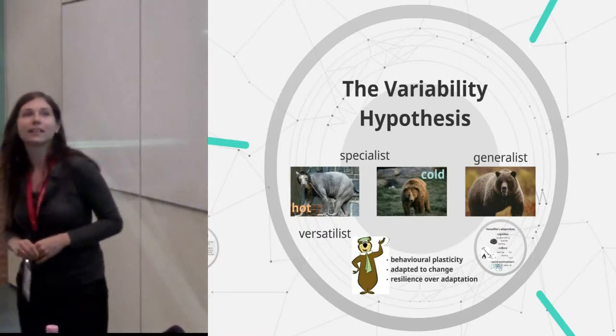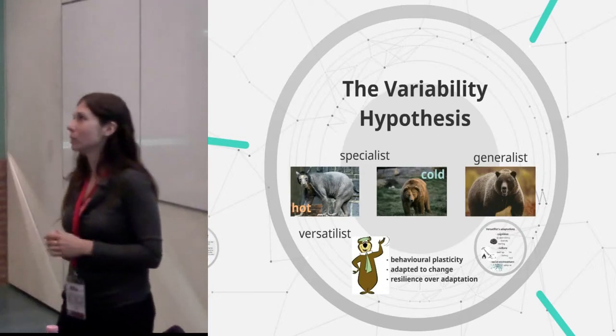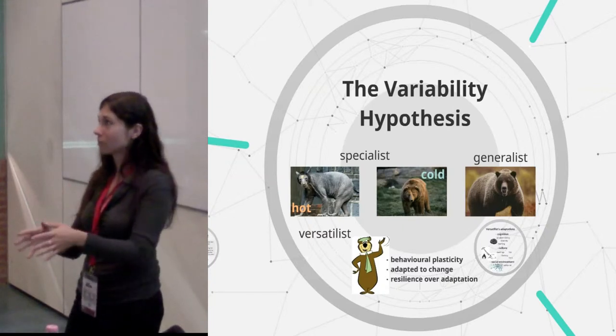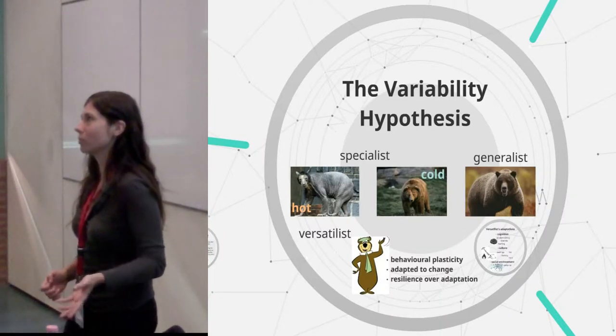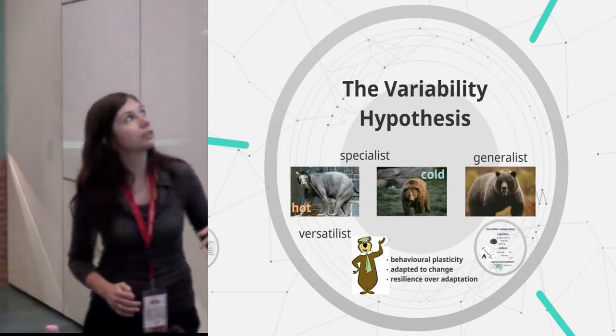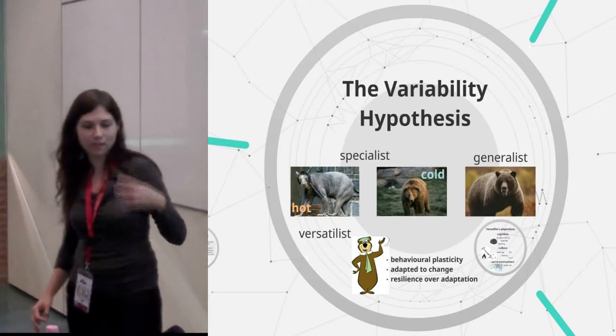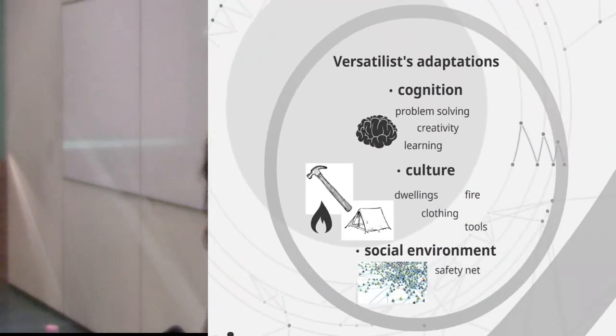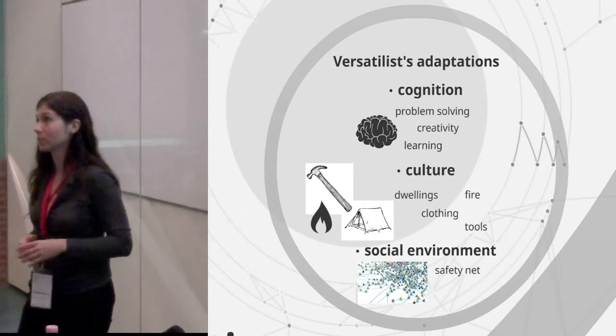So Rick Potts suggested that there's another type of adaptation, which is the adaptation to change. And the way you could think about it is a bear that actually sheds fur. So he's adapted both to cold and to hot, but the main kind of focus of the adaptation is the change. And I believe that most of the kind of fundamental human features that I mentioned before are very much such adaptations to change. So instead of being specialized or having a general adaptability pattern, it's the behavioral plasticity that allows such organisms to kind of prefer resilience over high level of adaptation.